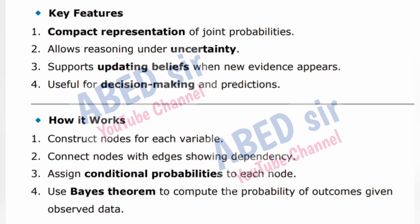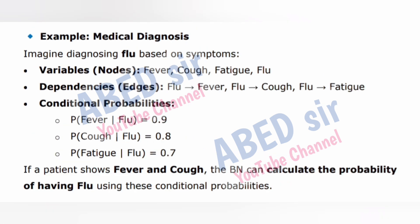Key features: 1. Compact representation of joint probabilities. 2. Allows reasoning under uncertainty. 3. Supports updating beliefs when new evidence appears. 4. Useful for decision making and predictions. How it works: 1. Construct nodes for each variable. 2. Connect nodes with edges showing dependency. 3. Assign conditional probabilities to each node. 4. Use Bayes' theorem to compute the probability of outcomes given observed data.